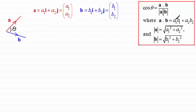Where a dot b was equal to a1 b1 plus a2 b2. And the magnitude of a was the root of a1 squared plus a2 squared.